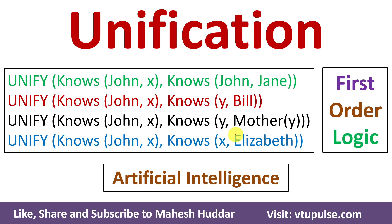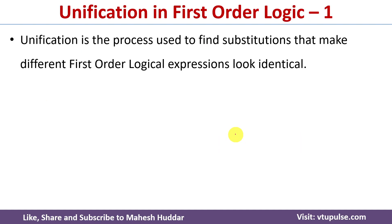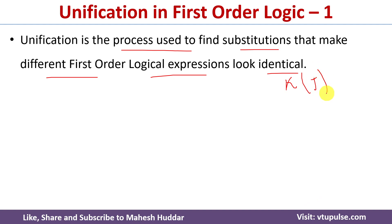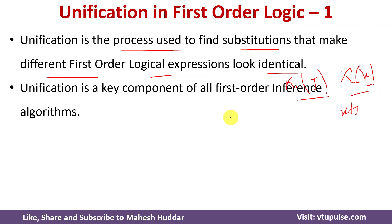Welcome back. In this video, I will discuss what is unification and what are the conditions to perform unification in first-order logic, with the help of simple examples in artificial intelligence. Unification is a process used to find substitutions in such a way that we can make two different first-order logical expressions look identical. For example, if we have expressions like King(John) and King(x), we can replace the variable x with John so both expressions look exactly the same. Unification is one of the very important components in first-order logical inference algorithms.